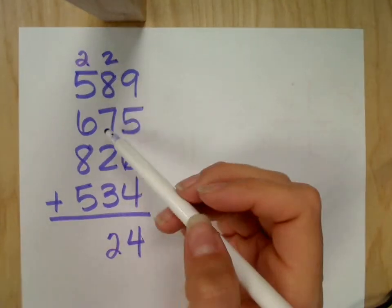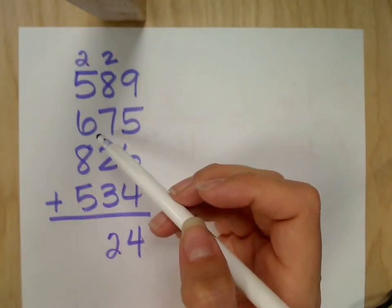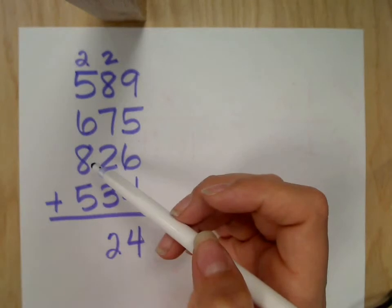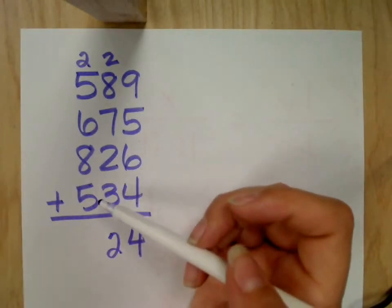Five and two. Seven. Plus seven plus six. Thirteen plus eight. Twenty-one plus five. Twenty-six.